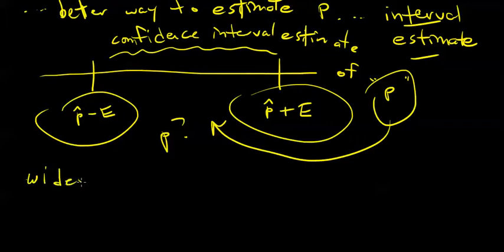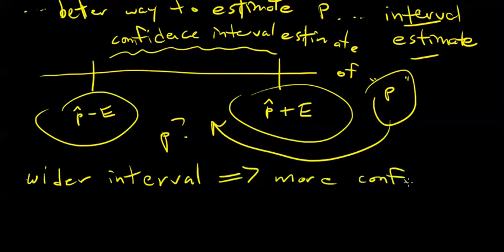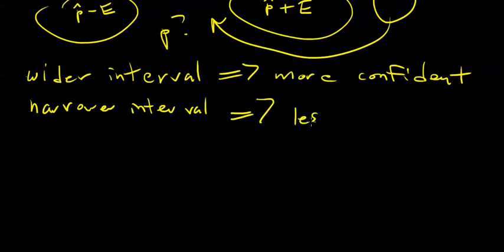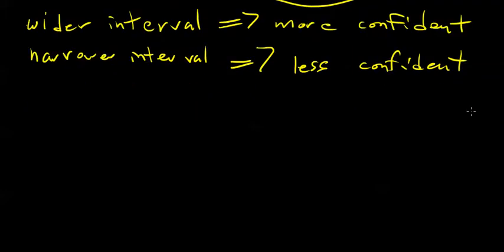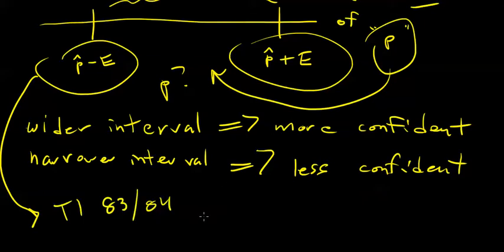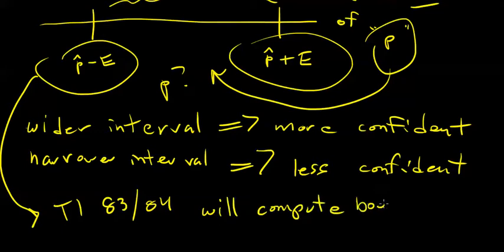Before we go into the nuts and bolts, I just want to note that if you've got a wider interval, you will be more confident that any such constructed interval will contain little p. And if you've got a narrower interval, you will be less confident that it will contain p. We're going to let the TI-83 or TI-84 calculator actually calculate these boundaries for us.